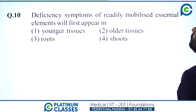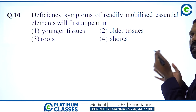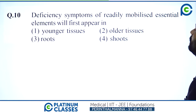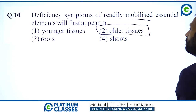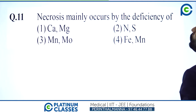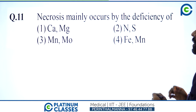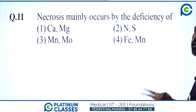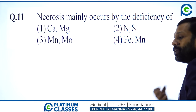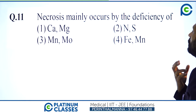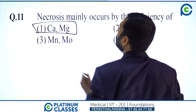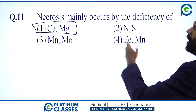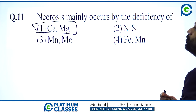Deficiency symptoms of readily mobilized essential elements will first appear in older parts or older tissues — option 2, because these elements are mobilized away from older tissue. Necrosis is mainly caused by deficiency of potassium, magnesium, calcium, or copper. The answer is calcium — option 1.